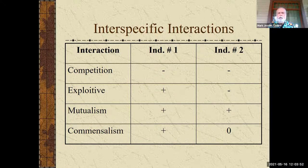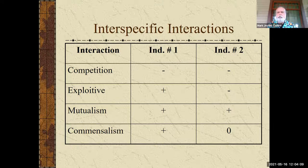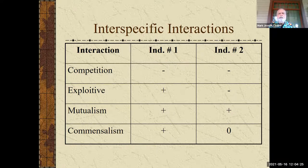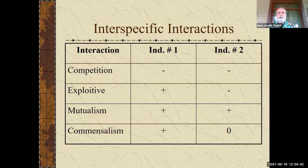Those are what those symbols mean. We're going to go through each one of these, and the second one down — exploitive — has changed over time. A lot of interspecific interaction tables will show that as predation, but I think people had trouble with that definition, so we've got exploitive and I'll explain that as we get there. Symbiotic relationships is another term I've seen in other books. Really what you're doing is looking at two individuals and how they are interacting and what they are getting from that relationship.